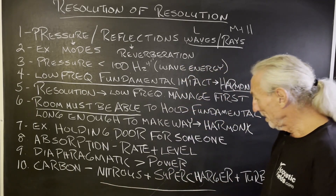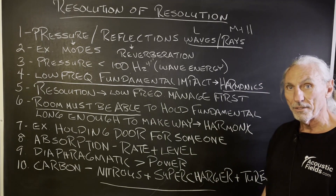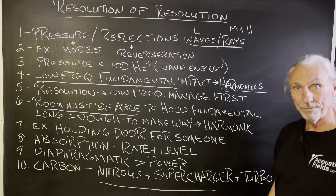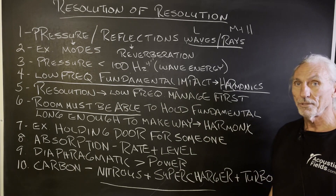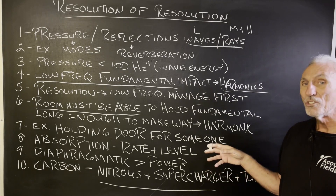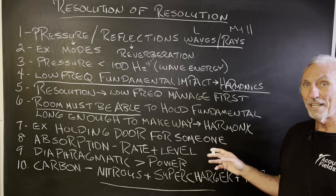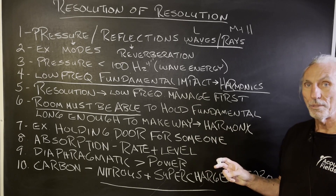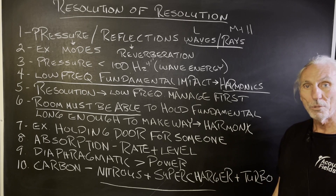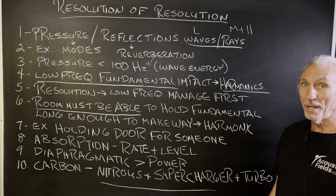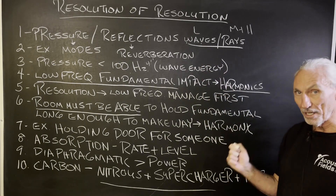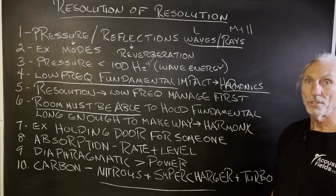Our carbon inside the diaphragmatic absorber has been around for years — it's not our technology. It would be the equivalent with cars, for you car guys, of a nitrous system, a supercharger, and a turbo, all in one vehicle, all in one engine. That's how powerful diaphragmatic is. 12 square feet of our carbon diaphragmatic absorbers will get 1 to 1.5 dB at 30 hertz per 12 square feet — that's one unit. That's a lot of power. It's 230 pounds, but that's what it takes to get that kind of wave energy. It needs a lot of horsepower — it's a strong energy.